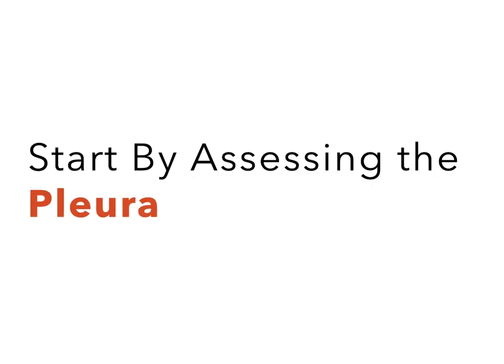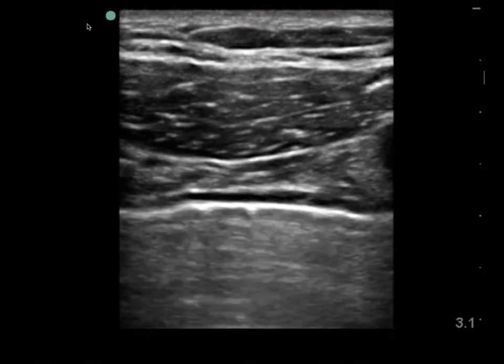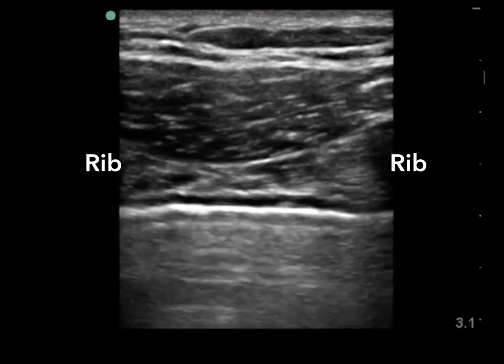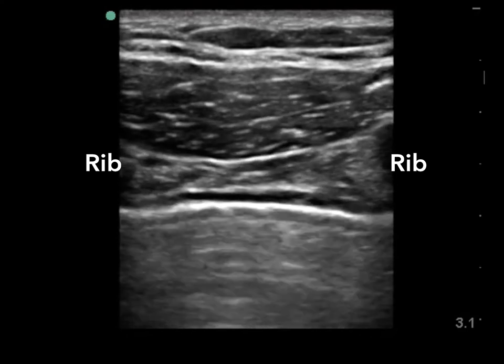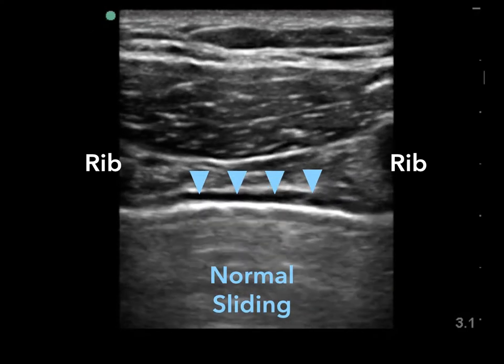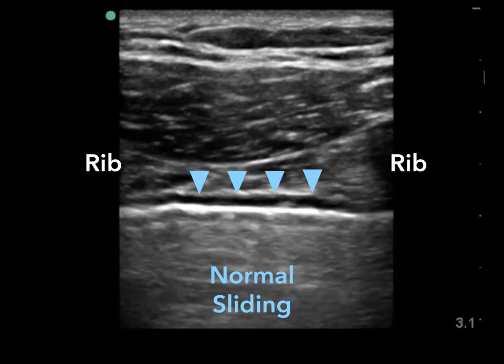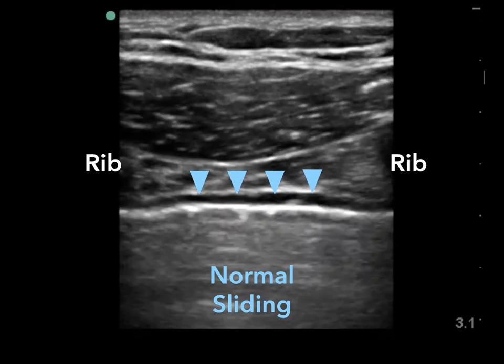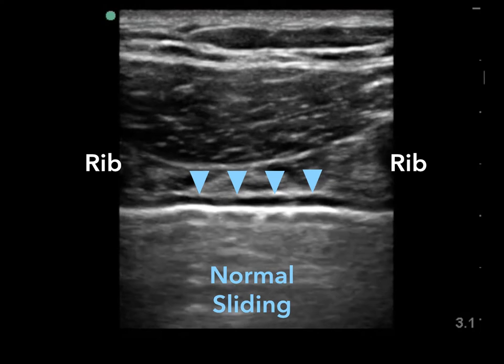For a detailed demonstration of the scan, please refer to the following YouTube video. For each rib interspace, start by assessing the pleura. Set your depth with the pleural line mid-screen, and if you can adjust your focus, set it at the pleural line. Our landmarks are the ribs, which are hyperechoic with black shadowing. The pleural line is the hyperechoic bright white line in between the ribs that appears to be moving — this is normal sliding, often described as having a scintillating or shimmering appearance.